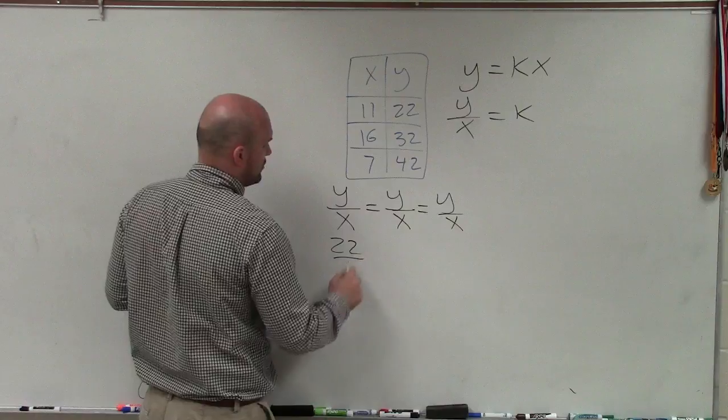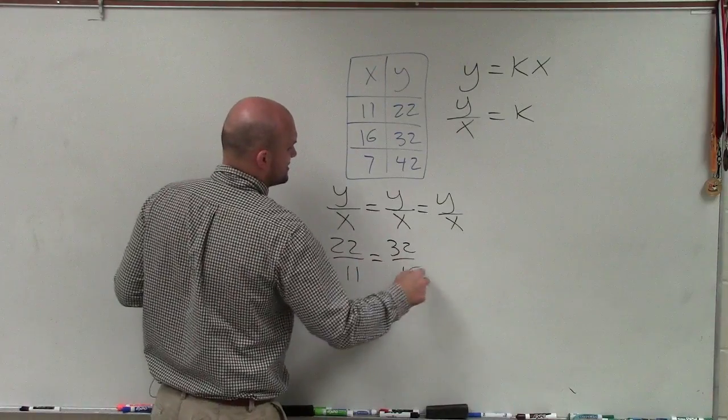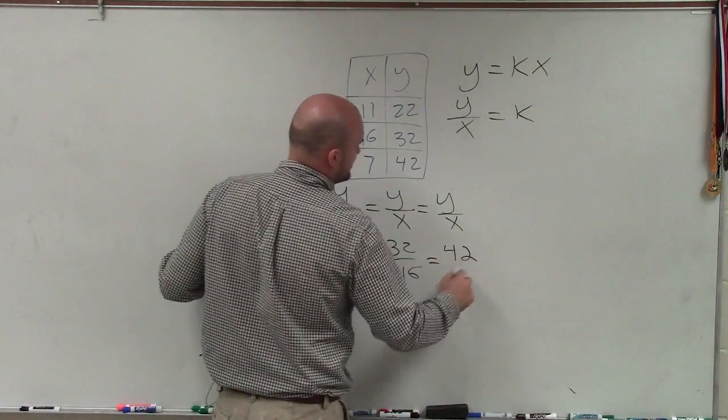So I'll simply check if 22 over 11 equals 32 over 16, which has to equal 42 over 7.